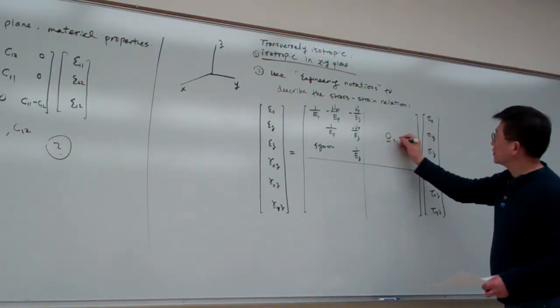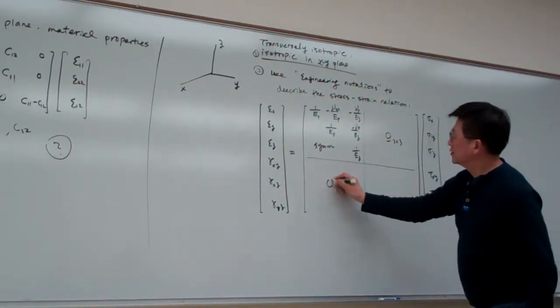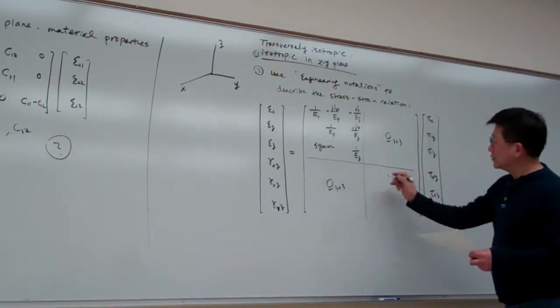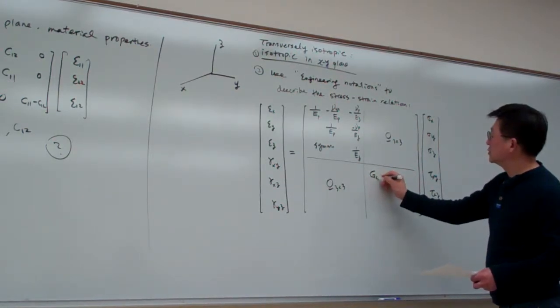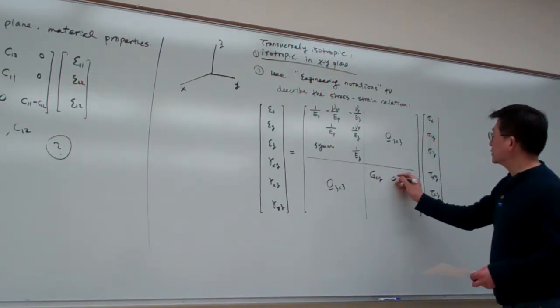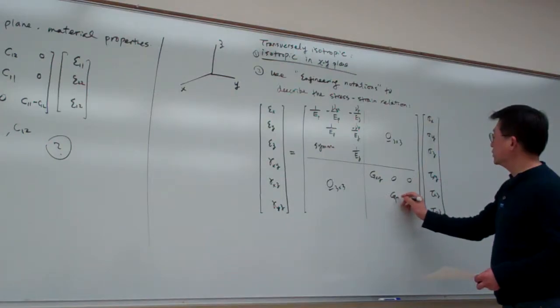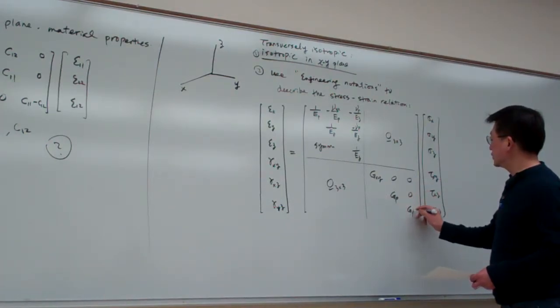And this is 0, 3, 5, 3. 0, 3, 5, 3. And this one simply is g, x, y, and 0, 0, and g, p, and 0, and g, p.